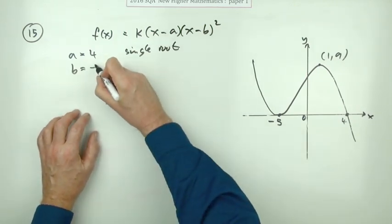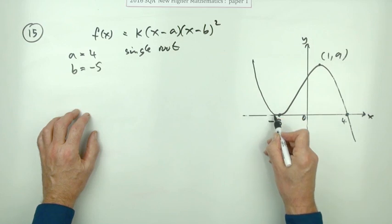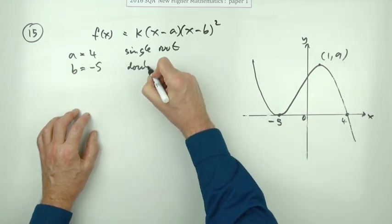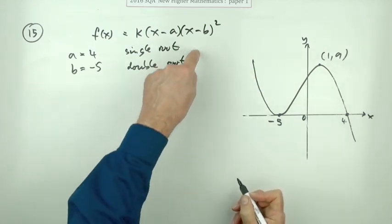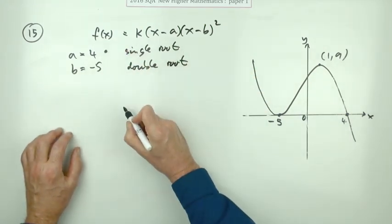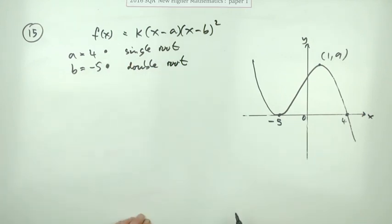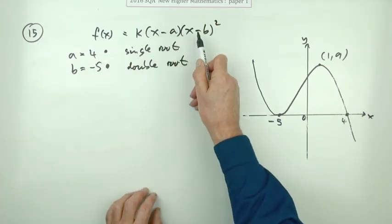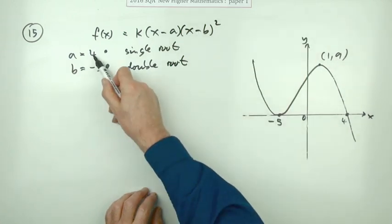And b at negative five, notice squared, that's a double root. It's a bounce off the axis, it's a tangent, and the reason that goes there, it's a double root. But it doesn't seem to ask for that in the marking scheme. It just gives you a mark if you say a is four and a mark if you say b is negative five. Remember it's x minus the root.